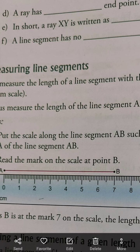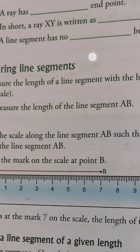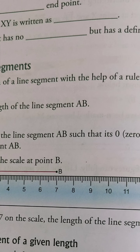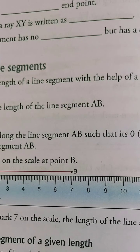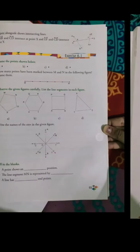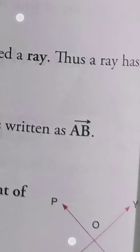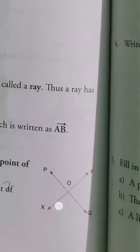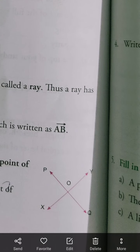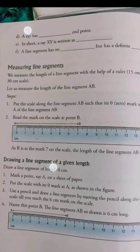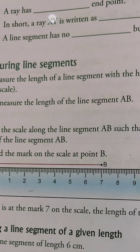Next is, in short a ray XY is written as blank. Because a ray means it starts from one place and where it's going, we don't know. So how can we represent this? XY, on top of XY we will draw an arrow. How will we draw the arrow? Let me show you. This is how we will draw the arrow. You can see here AB, and on top of it there's an arrow drawn like this. We have to draw an arrow on top of AB. So if you have line segment XY, you have to draw an arrow on top of XY in the same way. That will be your ray.